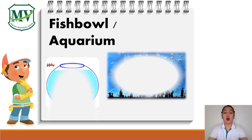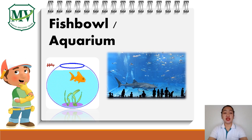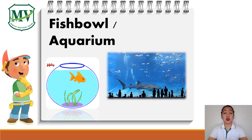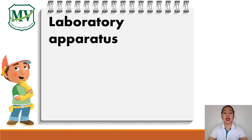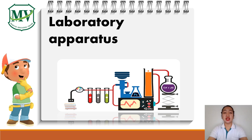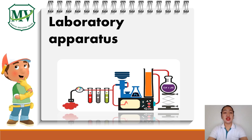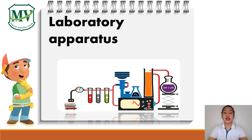Another example of transparent objects are fishbowl and aquarium. Both of them are made of clear glass. Everything inside — like fish and pebbles — are seen clearly because light passes through them. Next example is laboratory apparatus, which are instruments used in experiments. They are made of clear glass so we can see the measurements of the liquids. Examples are beaker, test tubes, cylinder, and Erlenmeyer flask.